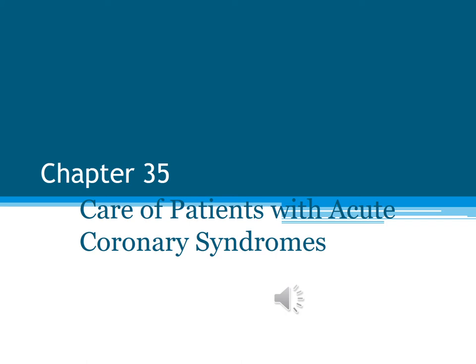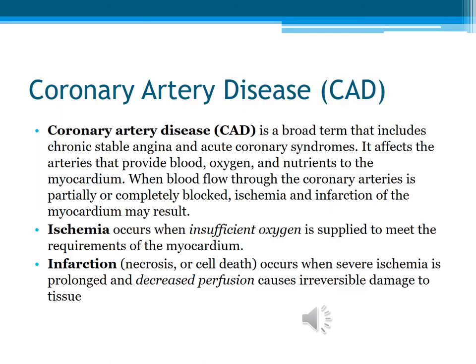We're going to go over Chapter 35 in your Iggy book, Acute Coronary Syndromes. This involves anything from a blockage in the coronary arteries to angina, which is chest pain, which can occur in an unstable or stable fashion. You need to know the difference between ischemia and infarction. Ischemia is when there is not enough oxygen to meet the requirements of the myocardium. An infarction occurs when there is severe ischemia or it's gone on long enough that there is actually necrosis or cell death.